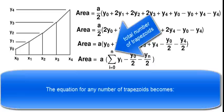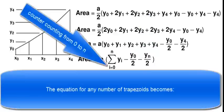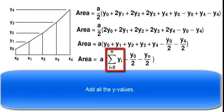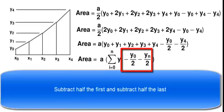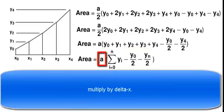N is the total number of trapezoids. Counter I goes from 0 to N. Add all the Y values. Subtract half the first and subtract half the last. Then multiply by delta X.